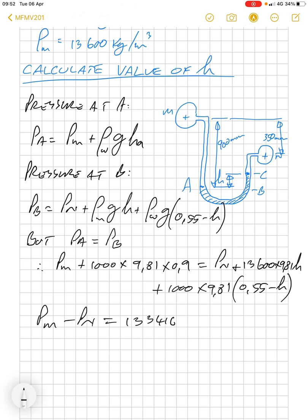13,344.16 H plus 5,395.5 minus 9,810 H minus 8,829.